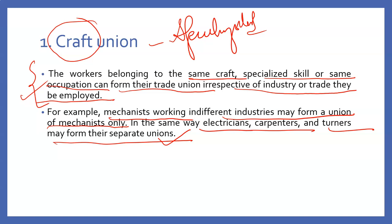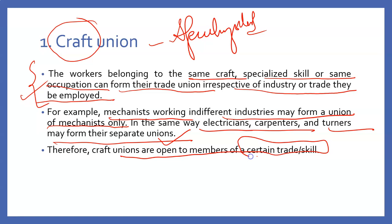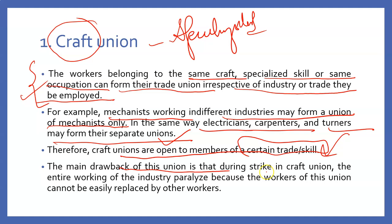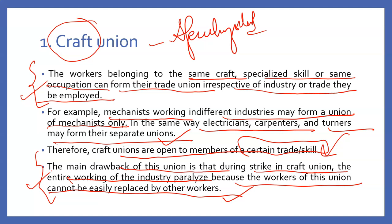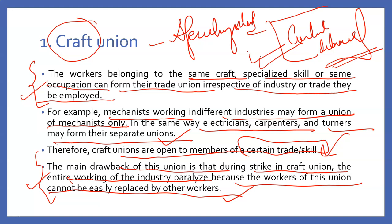Craft unions are open to members of a certain trade and skill — only those who are specialized in that skill can become members. The main drawback of this union is that during a strike, the entire working of the industry gets paralyzed because the workers cannot be easily replaced by other workers. In normal cases, companies call contract labor during a strike, but here that is not possible because these are specialized people and you will not get a good replacement for them.